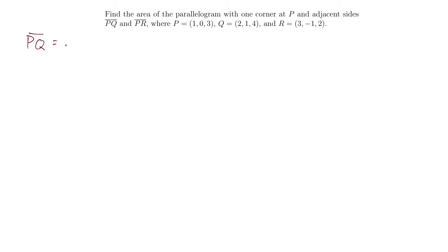So let's look first at the side PQ. Let's call that vector V and let's try to find the position vector. I need to figure out how far I move in the x direction. I end at 2 and I start at 1, so that's a difference of 1. 2 minus 1 is 1.